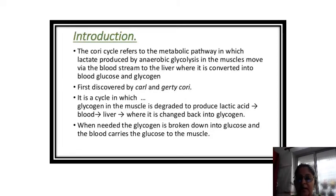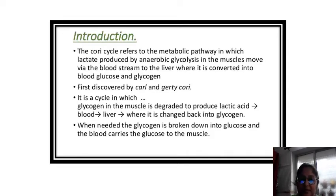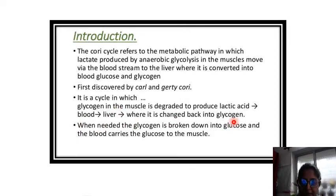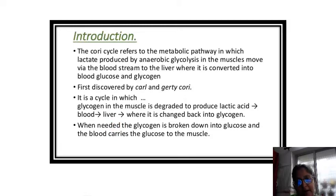When needed, the glycogen of the muscle is broken down into glucose and the blood carries that glucose to the muscle. It is a cycle where glycogen in the muscle is degraded to produce lactic acid, which moves to the blood, then to the liver, and is converted back to glycogen. So liver glycogen to muscle glycogen, and again muscle glycogen to liver glycogen.